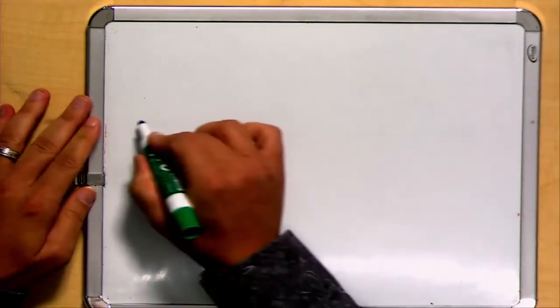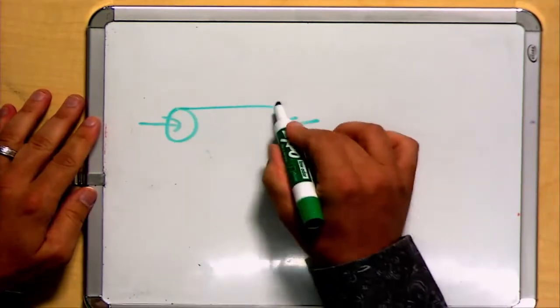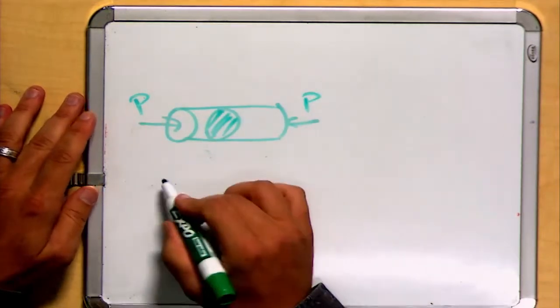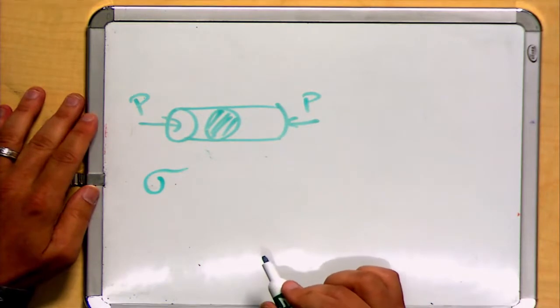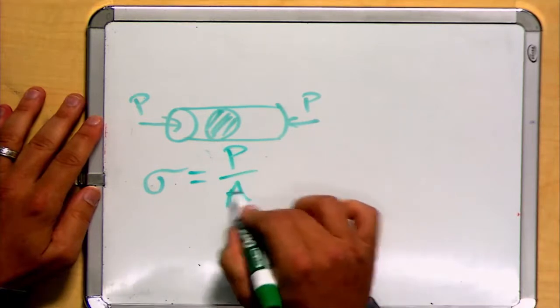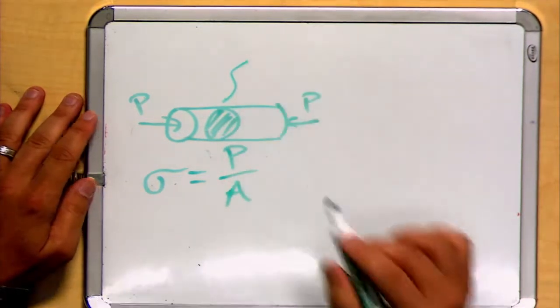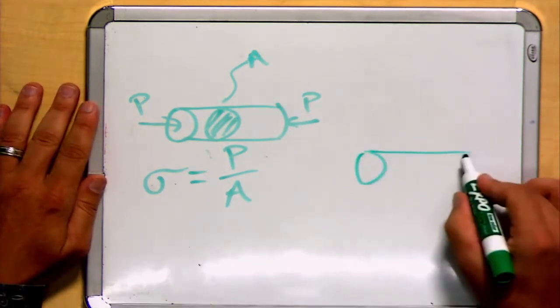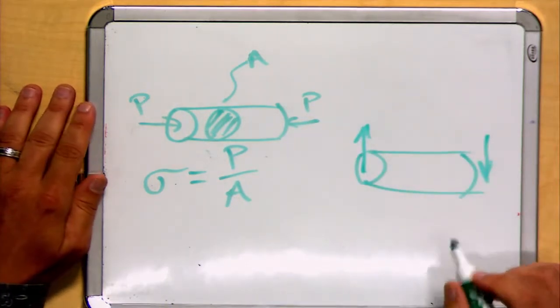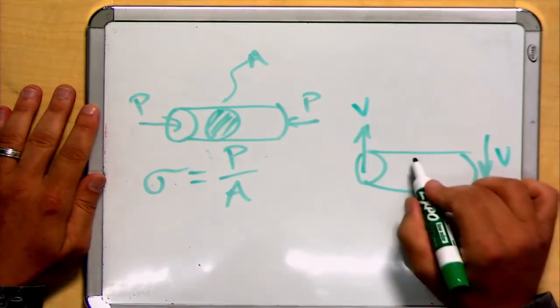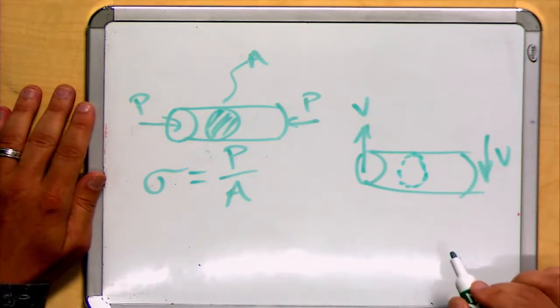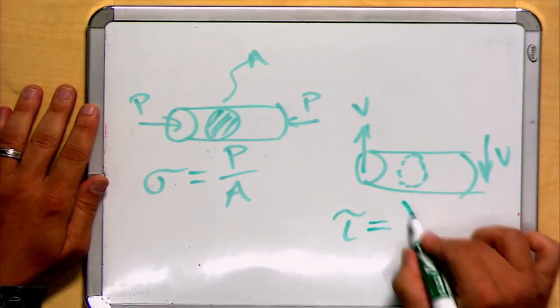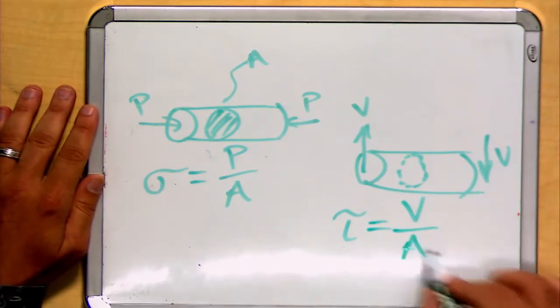For example, if we apply a normal load to a bar, we can calculate axial normal stress. The stress is the force divided by a cross-sectional area, where this area is the area across the section of the bar. Similarly, if we instead apply tangential forces and create shear, usually labeled V, we can define shear stress, denoted with tau, as the total force due to shear divided by the cross-sectional area.